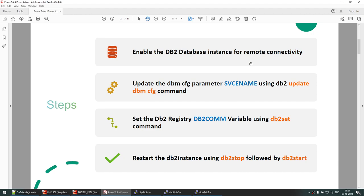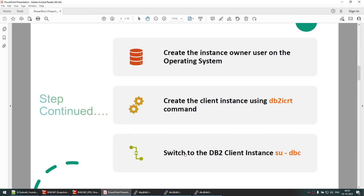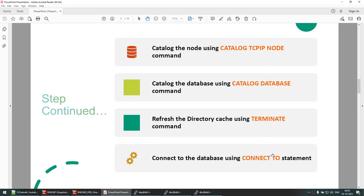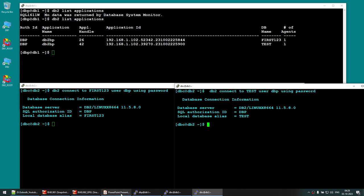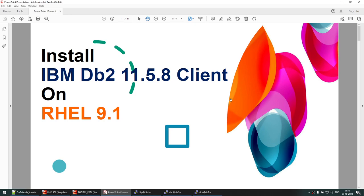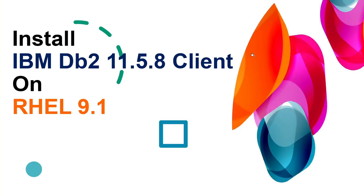To summarize: enable the database for remote connectivity by updating the service name and registry variable, stop and start the instance. Then download and install the client, create the client instance using 'db2icrt', catalog the node, catalog the database, and connect. This tutorial covered how to install IBM DB2 11.5.8 client on RHEL 9.1. If you found this helpful, subscribe for more videos. Thank you for watching!